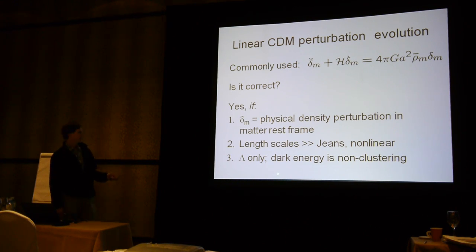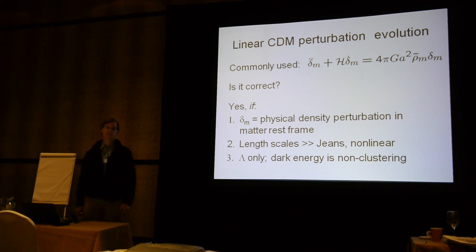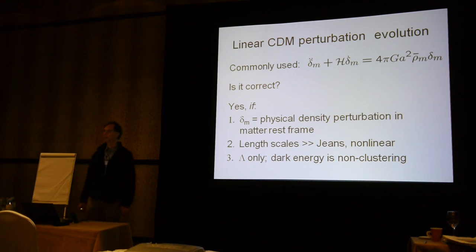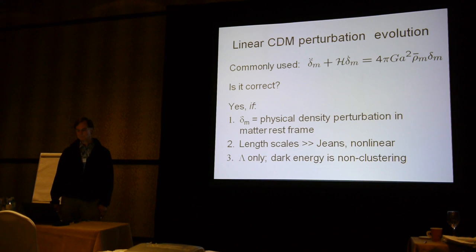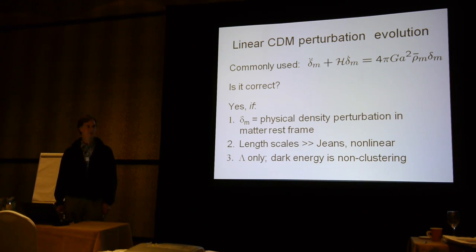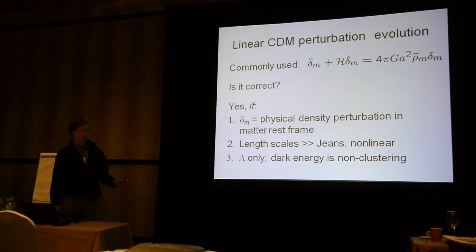One also has to think about possible clustering of dark energy. In a ΛCDM model, the cosmological constant is completely inert — it has no perturbations; there are no scalar perturbations of a lambda-dominated universe. However, if the dark energy is dynamical — a quintessence field or something else — then it will develop density perturbations, and this equation would need to be modified.